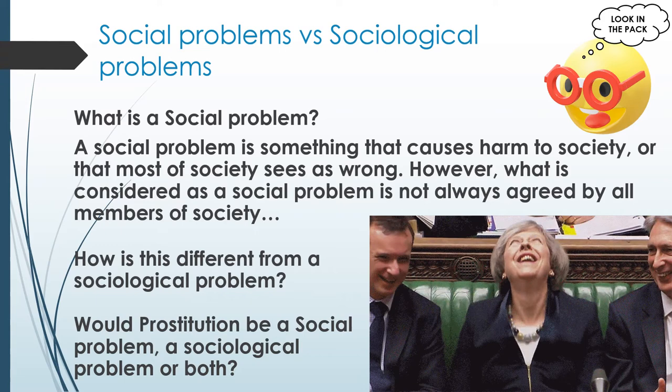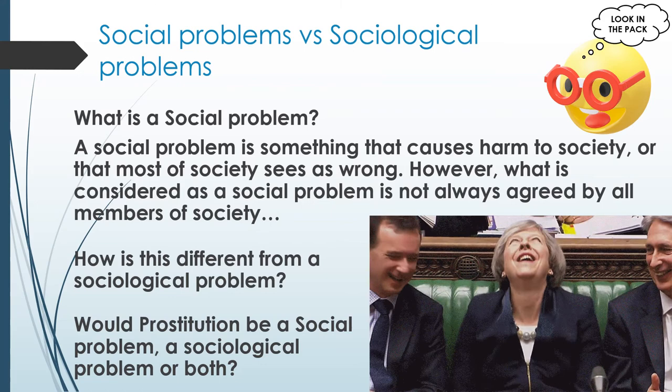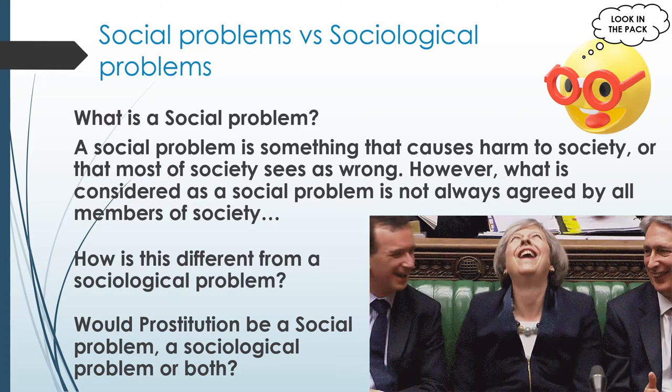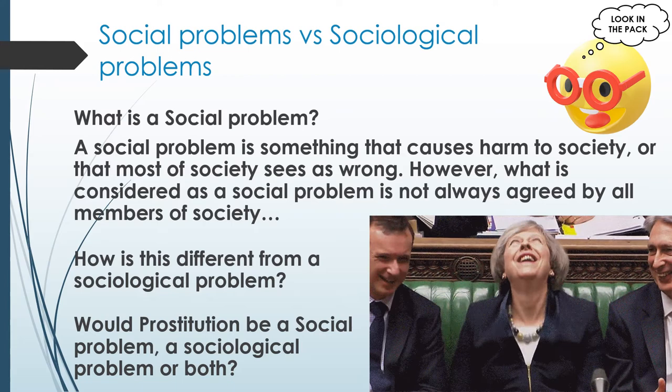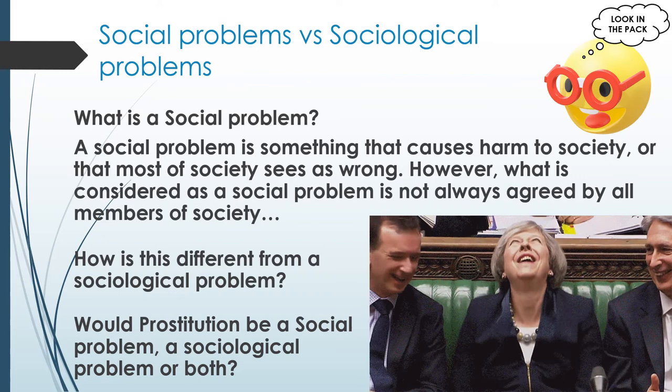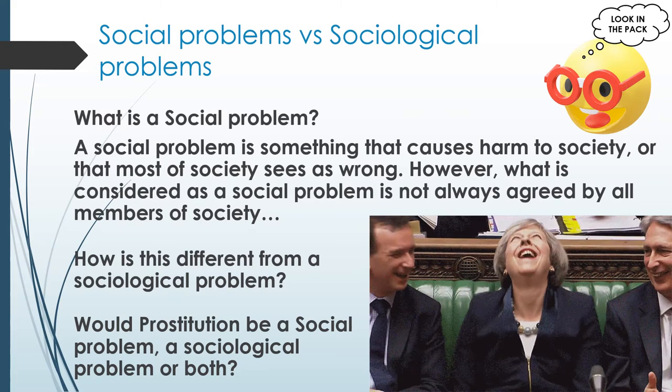Now we need to think about the difference between a social problem and a sociological problem. A social problem is something that causes harm to society — most of society sees it as a problem — however, what is considered a social problem is not always agreed upon by all members of society. Generally a social problem causes harm and a majority of people see it as a problem, but it doesn't have to be everyone.